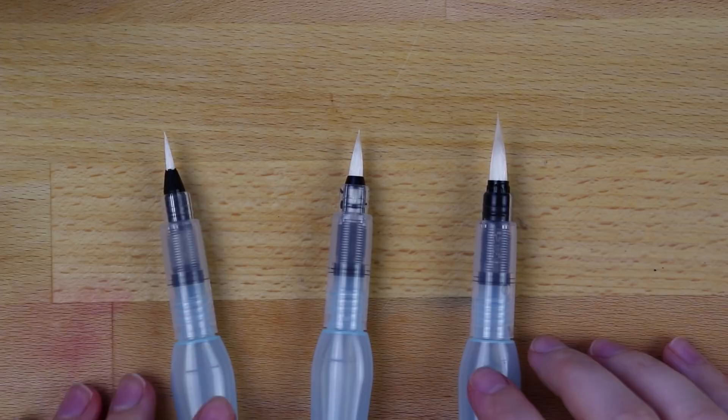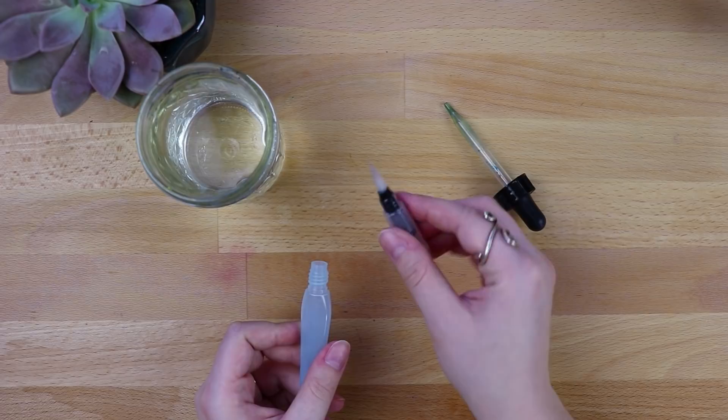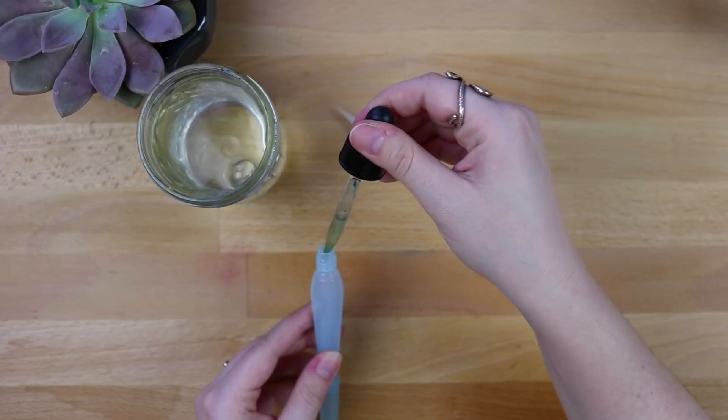The way you fill these up is you unscrew the cap and then the brush head comes right off. Of course you can fill this up under a faucet. Since I'm filming I don't have a faucet, I have an eyedropper and a glass of clean water. There's a line on the barrel that will tell you where to stop so you don't overfill it. You can see that the barrel is full of water now.